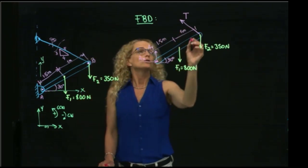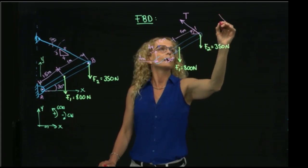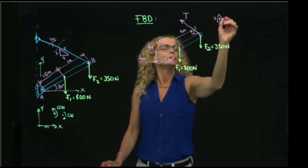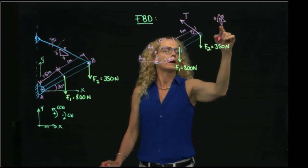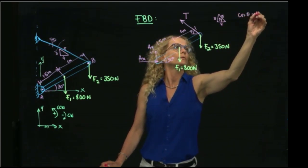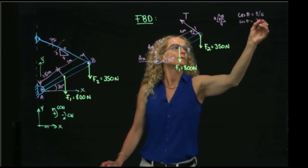And we know this angle right here, theta, because we know that this triangle theta has 4 or 3 as side and 5 as hypotenuse. So, we know that the cosine of theta will be 4 over 5, and the sine of theta will be 3 over 5.